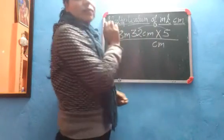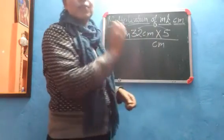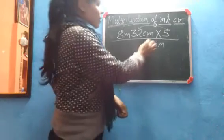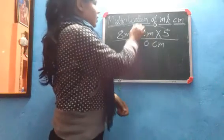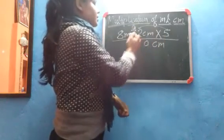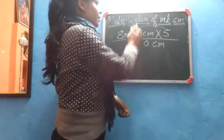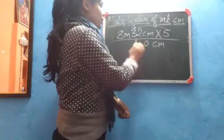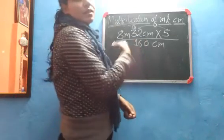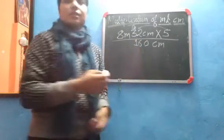5 twos are 10, write 0 carry 1. 5 threes are 15, and 1 carried is 16. So 32 multiplied by 5 gives us 160.